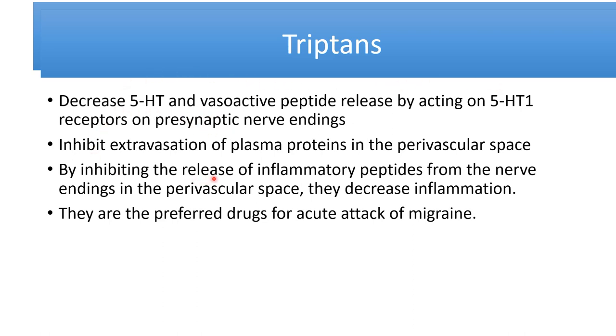Triptans also inhibit extravasation of plasma proteins into the perivascular space by inhibiting the release of inflammatory peptides from nerve endings in the perivascular space, thereby decreasing inflammation.